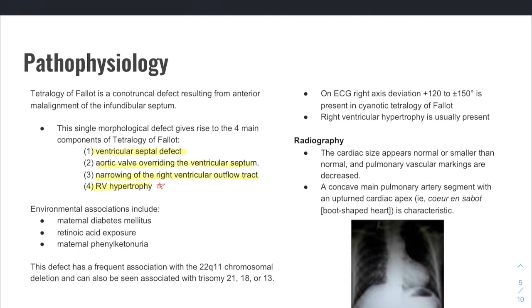Some causes of TOF: maternal diabetes, retinoic acid exposure, PKU in the mother. And then you can also have it associated with some chromosomal defects. This is a 21Q11 deletion, which is associated with some chromosomal trisomies. So you might get that as well.